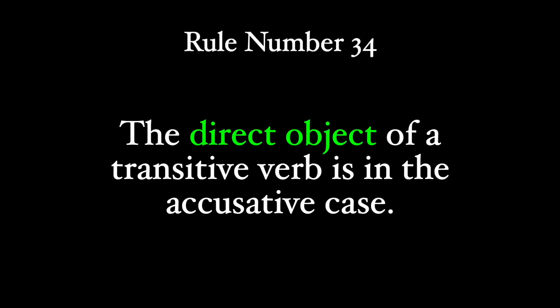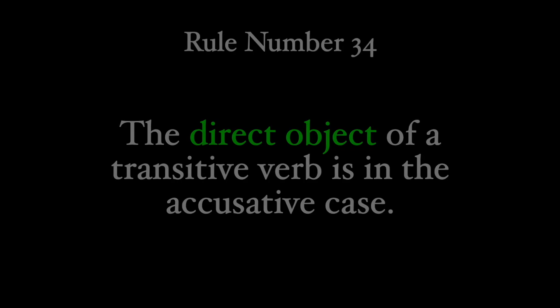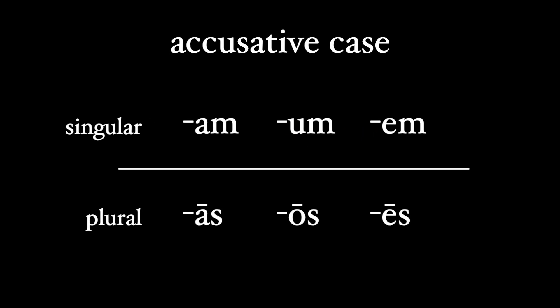Rule number 34: the direct object of a transitive verb is in the accusative case. When I usually introduce the accusative case, I tell my students that this is the most important concept to master with learning Latin as an English speaker. For the most part, English doesn't use cases to identify the role of a noun. Instead, it uses word placement.